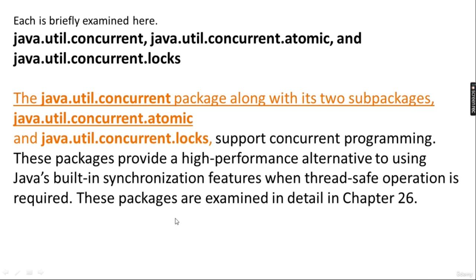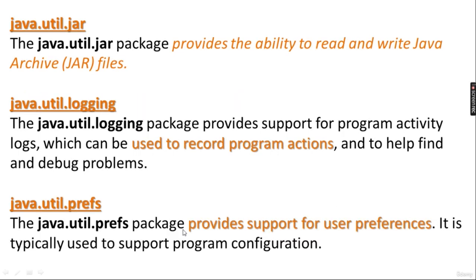The atomic and locks packages give a high-performance alternative for synchronization when traditional synchronization operations are required. These packages are examined in detail in an upcoming chapter. The jar package provides the ability to read and write Java JAR archive files. The logging package provides support for program activity logs, which can be used to record program actions and help find and fix problems. The preferences package provides support for user preferences, typically used for program configuration.